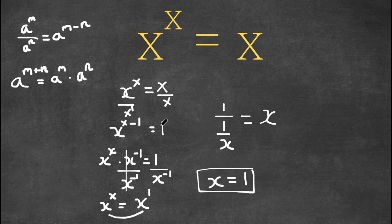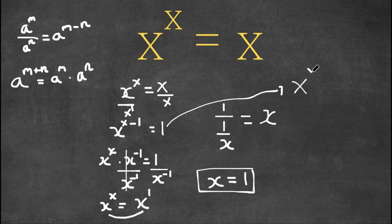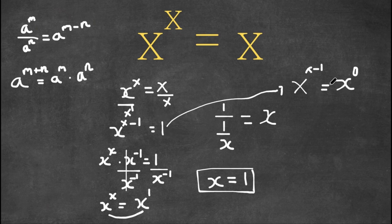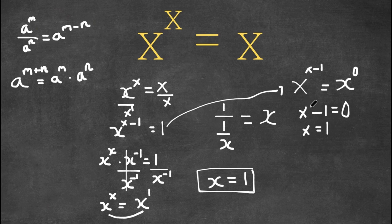So we get x equals 1, and this is a solution. However, remember this equation: x to the power of x minus 1 equals 1. I'm actually going to rewrite this as x to the power of x minus 1 equals x to the power of 0, because 1 is the same thing as x to the power of 0. Now we're going to do the same thing — set our exponents equal to each other: x minus 1 equals 0. And if we add one on both sides, we get x equals 1. So this is another way of doing it, and our solution is x equals 1.